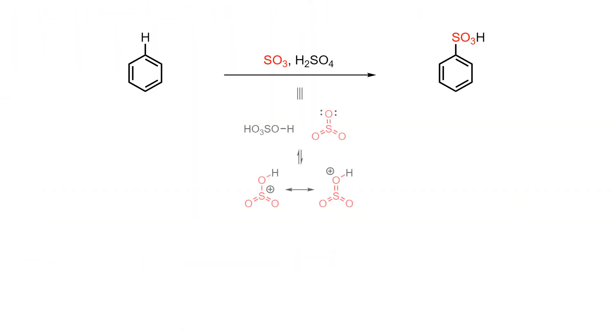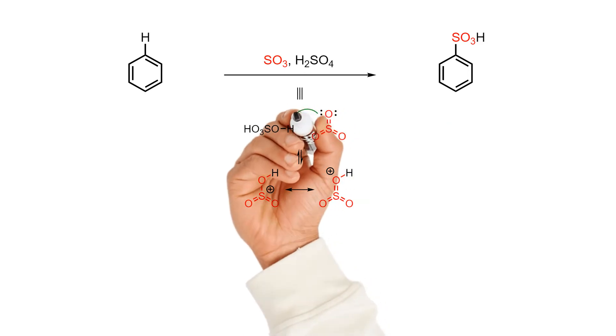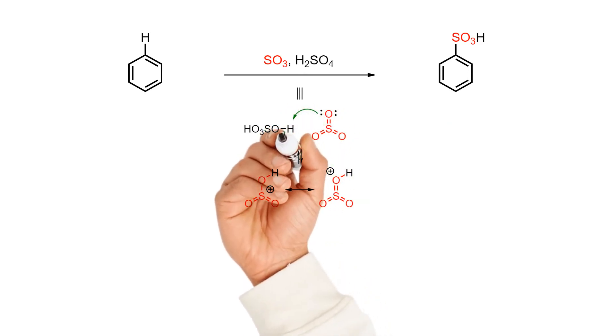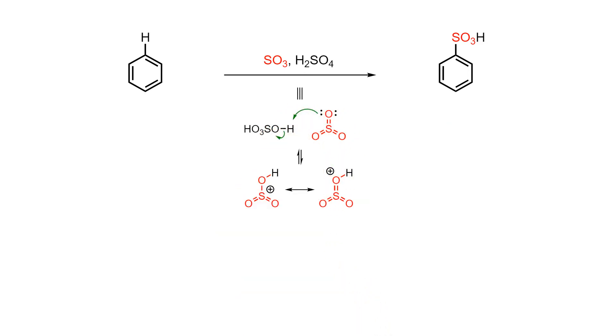Formation of the electrophile involves sulfur trioxide being protonated by sulfuric acid. While the central sulfur of SO₃ is already electrophilic, protonation makes it even more so, as shown by the accompanying resonance structures.